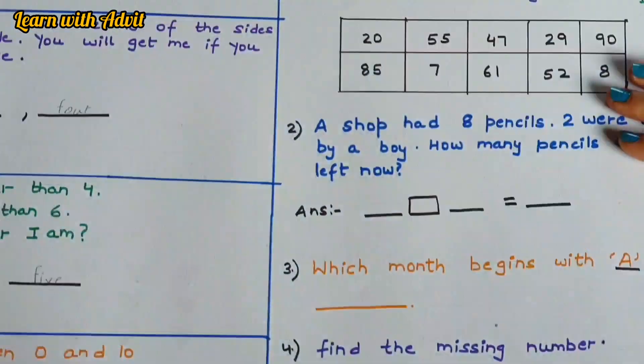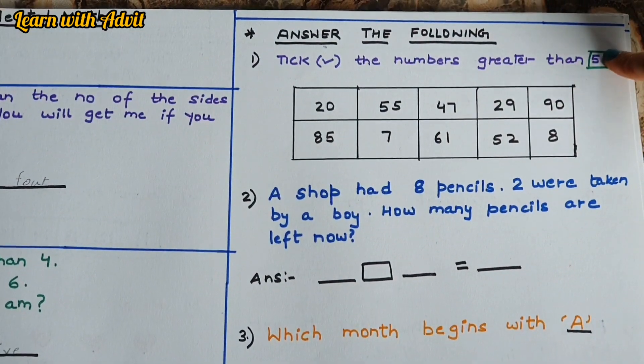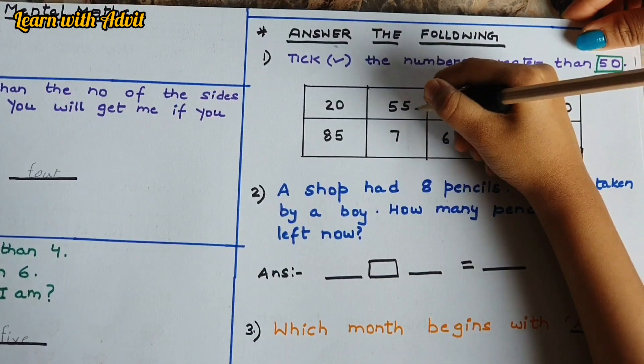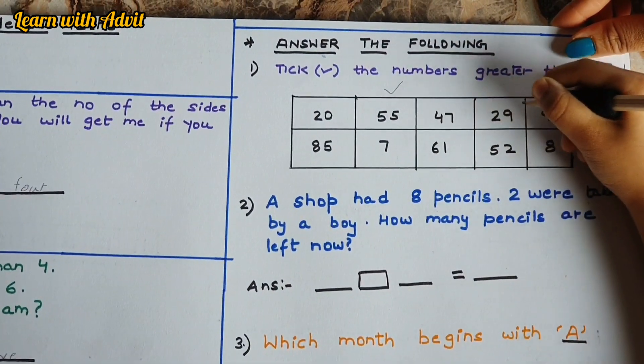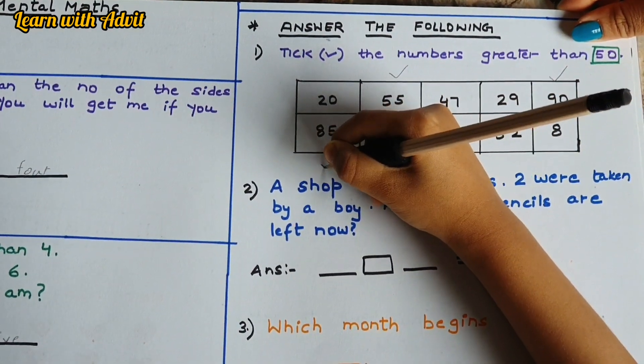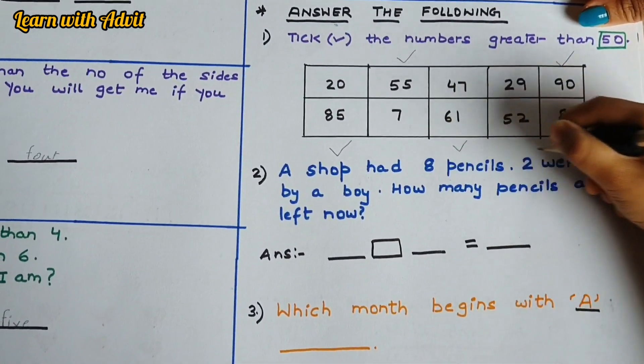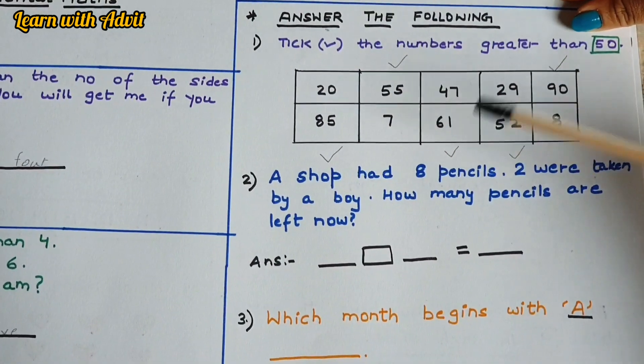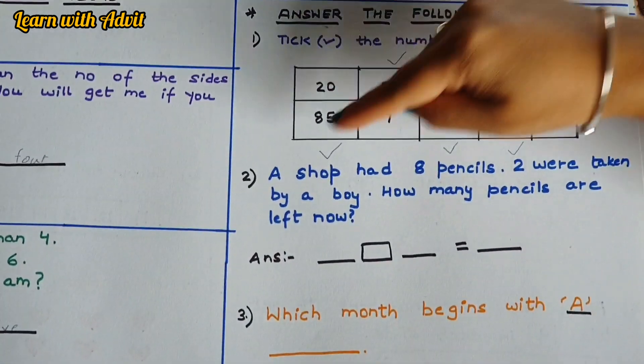In this sheet there are some questions you have to answer. Tick the numbers greater than 50. 50, 55, yeah, 90, 85, 61, 52. One, two, three, four, five numbers greater than 50. Very good.